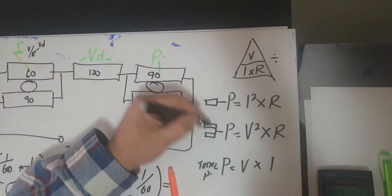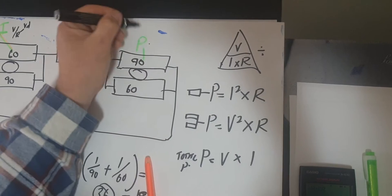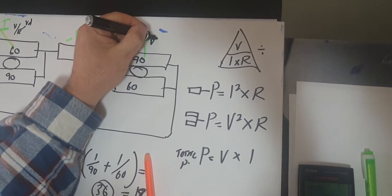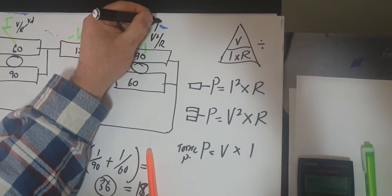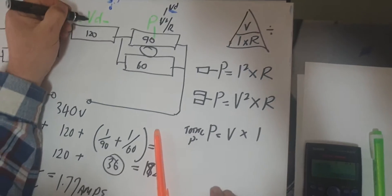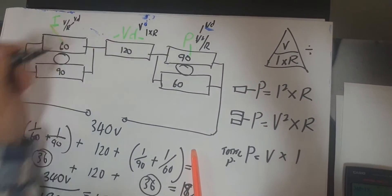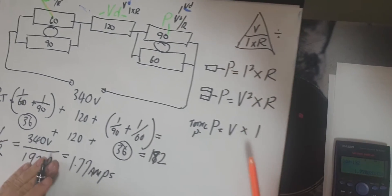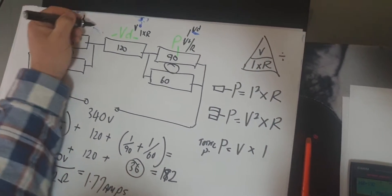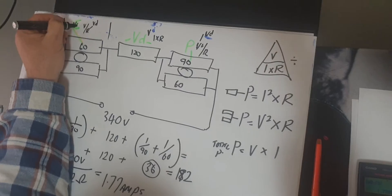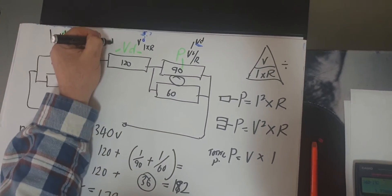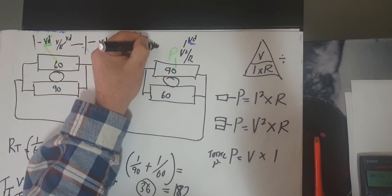P equals - now remember how we said a parallel path. If we look here, P will be V squared over R, so we'll need to put voltage drop in there. And the actual voltage drop here will be I times R. So what I'm going to do is break this down to do three voltage drops - a voltage drop here, a voltage drop here. I'm going to do the three voltage drops first.